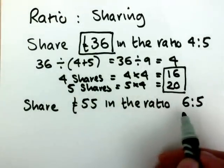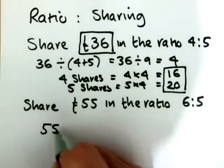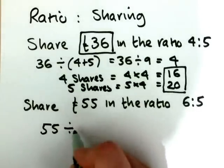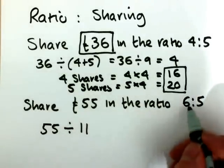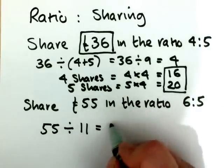We'll try that on a different problem. We've got £55 to share in the ratio 6 to 5. We'll do 55 divided by 11. The 11 comes from 6 plus 5, so that equals 5. One share equals 5.